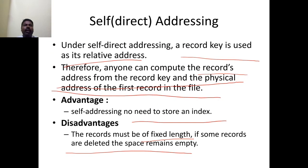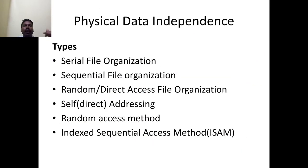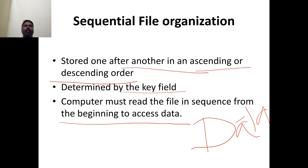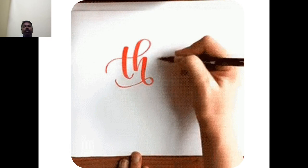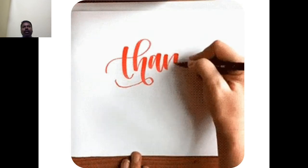These are all the types of file organizations available: serial, sequential, random or direct, self direct addressing, random access method, and indexed sequential access method. Watch the video one more time if you have any doubt — it is a very easy topic. If you still have any doubt, you can call or message me. Thank you for watching this video. We will meet in the next class with some other topic.